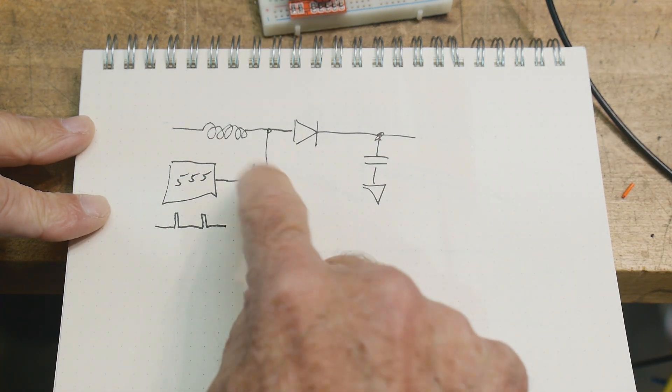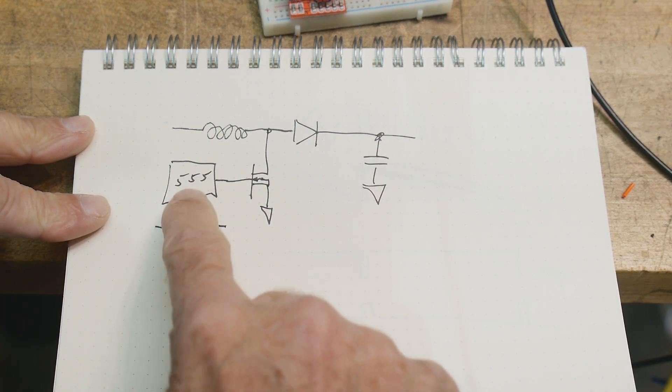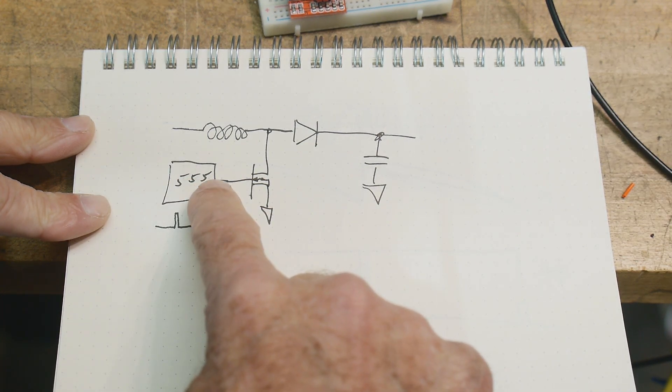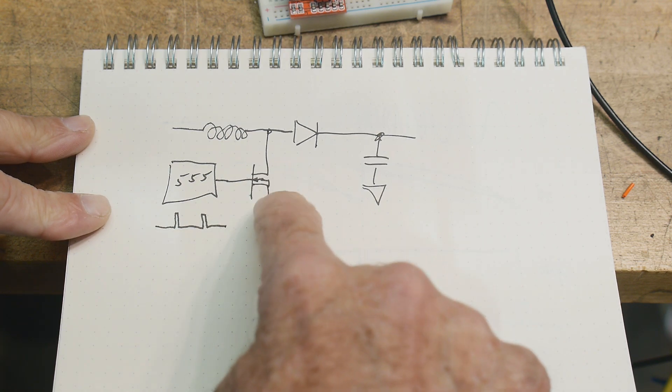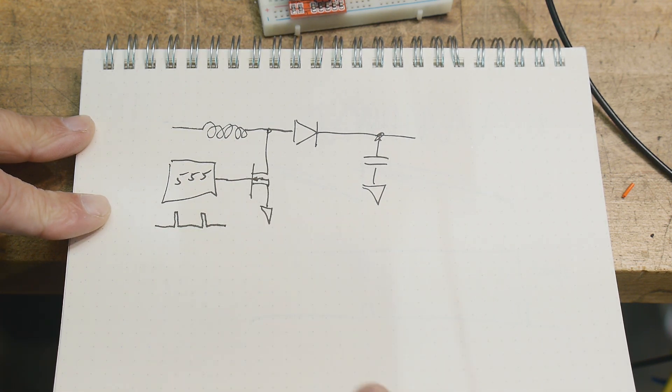That'll pull down to ground. So we'll have high-going pulses on the 555, and then we'll get low-going pulses on the switch.